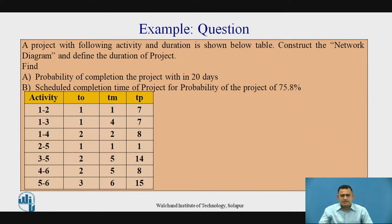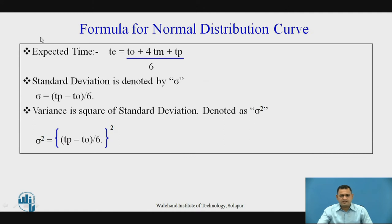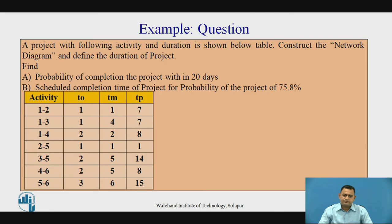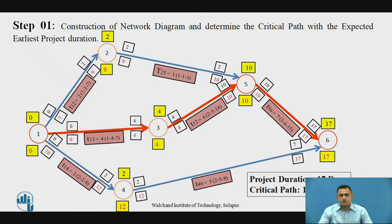Now let's start stepwise. These are the activities and their optimistic times. We have to determine the expected time for each activity using the formula Te = (To + 4Tm + Tp) / 6. With this formula we define the expected time of each activity, then construct the network diagram using the AOA method, the activity-on-arrow network technique.